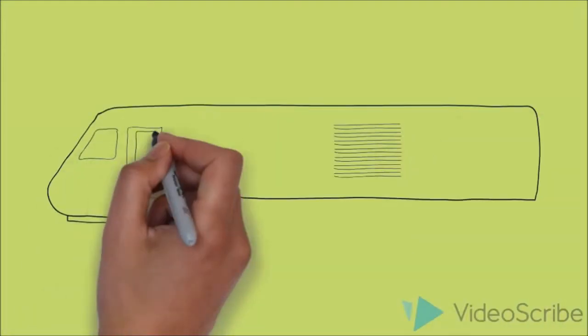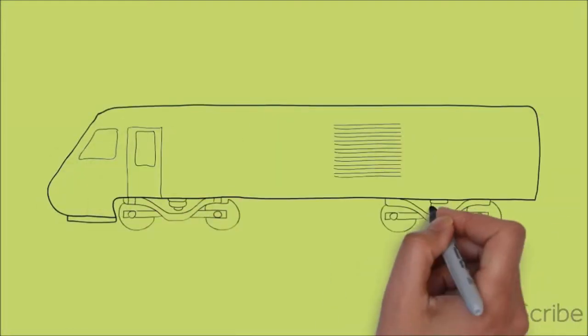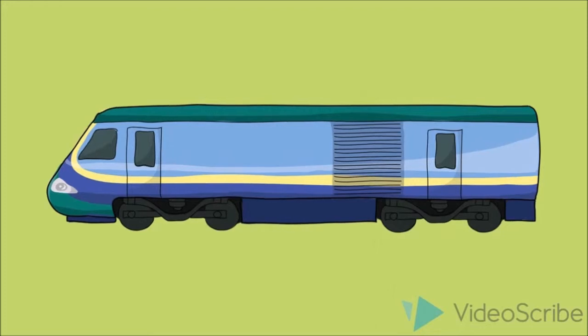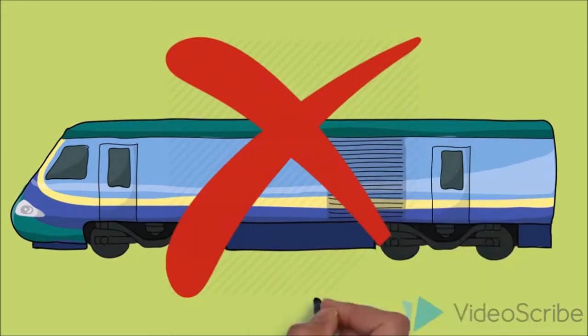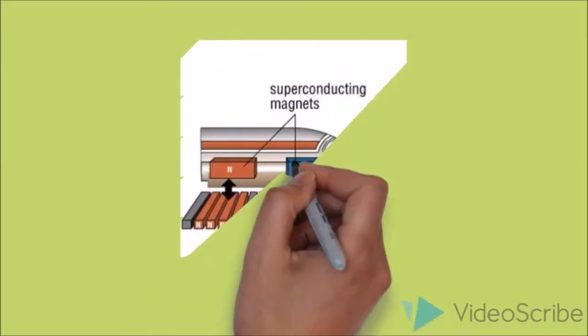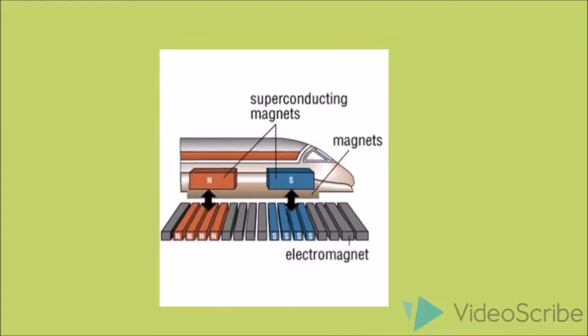The maglev train does not require wheels or rails to operate. Instead, it uses electromagnets which create a magnetic field that helps guide and lift the vehicle. This ensures that the train does not have any contact with the charge underneath it, allowing the train to be frictionless.